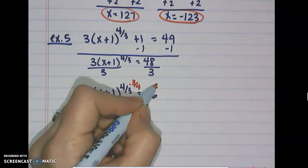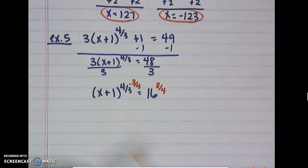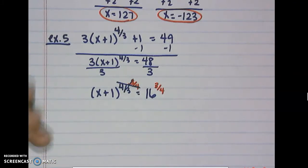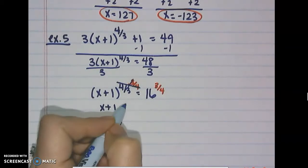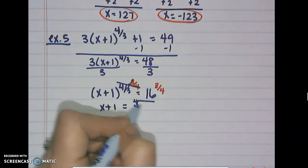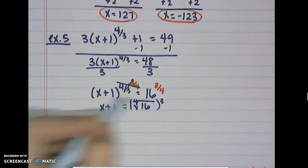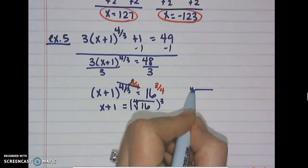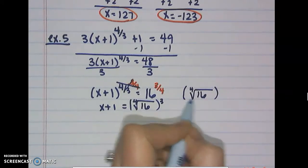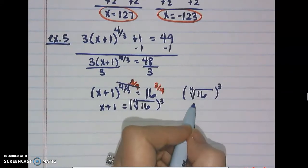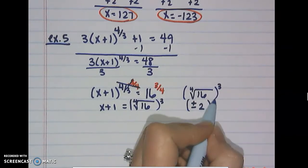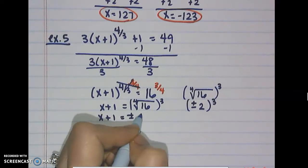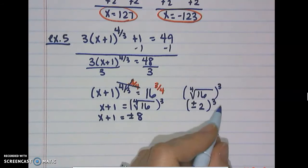To eliminate the 4/3 exponent, we take both sides to the 3/4 power — 4/3 times 3/4 goes away — leaving x plus 1. On the right we have the fourth root of 16 to the third power. The fourth root of 16 can be positive or negative 2, so we get x plus 1 equals ±8.